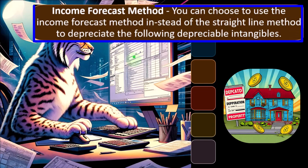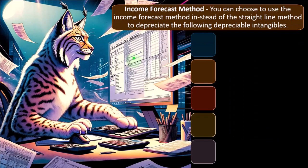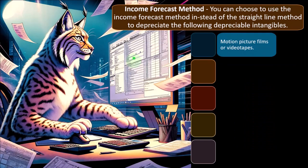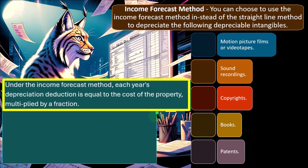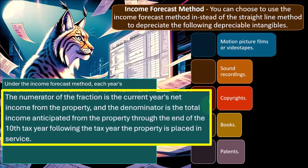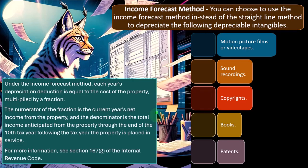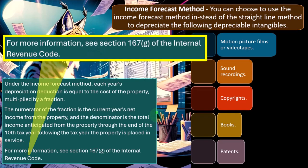Income forecast method: you can choose to use the income forecast method instead of the straight-line method to depreciate certain depreciable intangibles — motion picture films and videotapes, sound recordings, copyrights, books, and patents. Under the income forecast method, each year's depreciation deduction equals the cost of the property multiplied by a fraction: the numerator is the current year's net income from the property and the denominator is the total income anticipated from the property through the end of the 10th tax year following the tax year the property is placed in service. For more information, see Section 167(g) of the Internal Revenue Code.